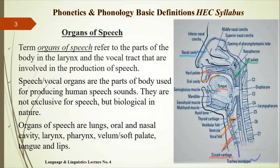The organs of speech refer to the parts of the body in the larynx and the vocal tract that are involved in the production of speech sounds. Speech or vocal organs are used for producing human speech sounds. They are not exclusive for speech but also biological in nature. The organs of speech or articulators are: lungs, oral and nasal cavity, larynx, pharynx, velum, tongue and lips.